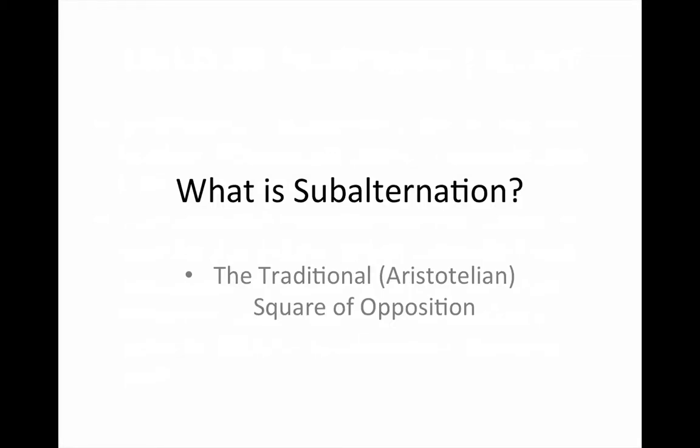What is subalternation? That question is answered when we study the traditional or Aristotelian square of opposition. I'm going to assume that you are already familiar with a categorical proposition — more specifically, with the categorical proposition types: namely, the two quantities, universal and particular, and the two qualities, affirmative and negative.